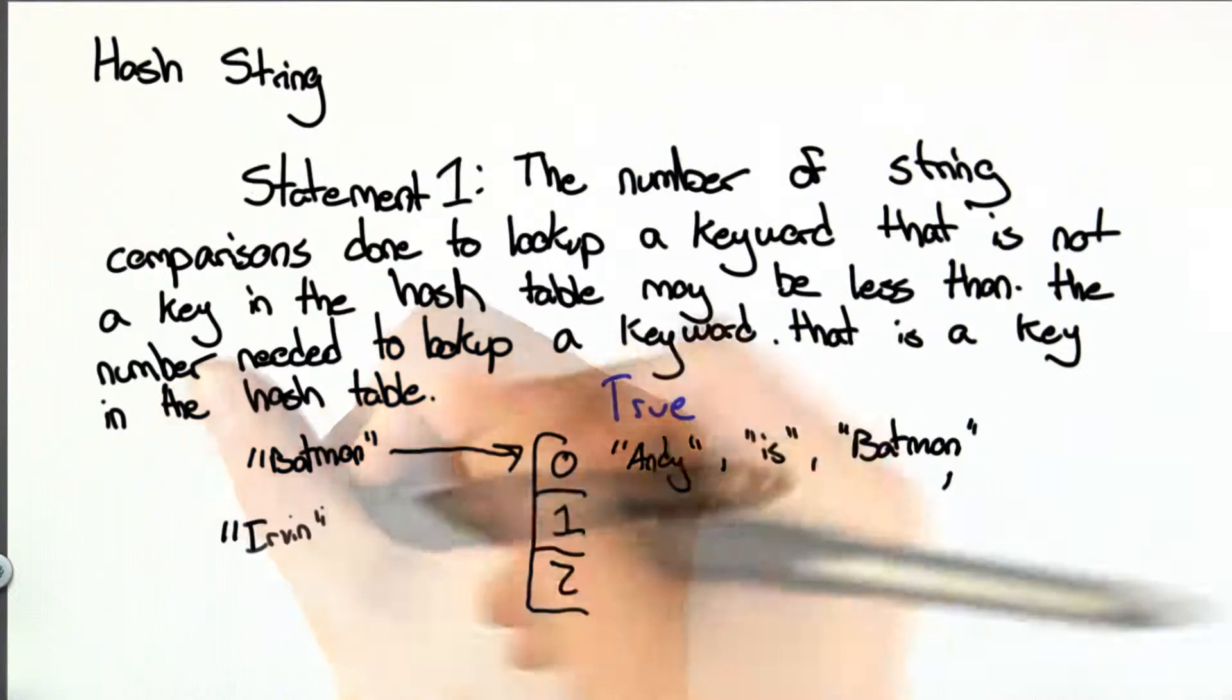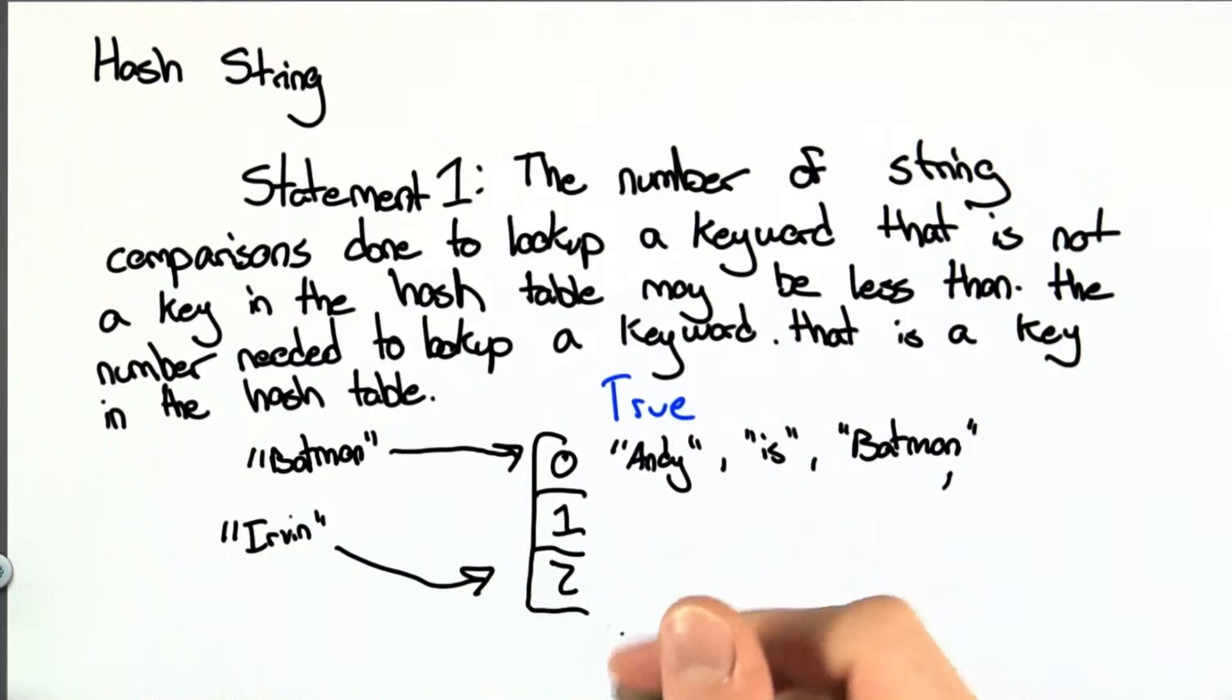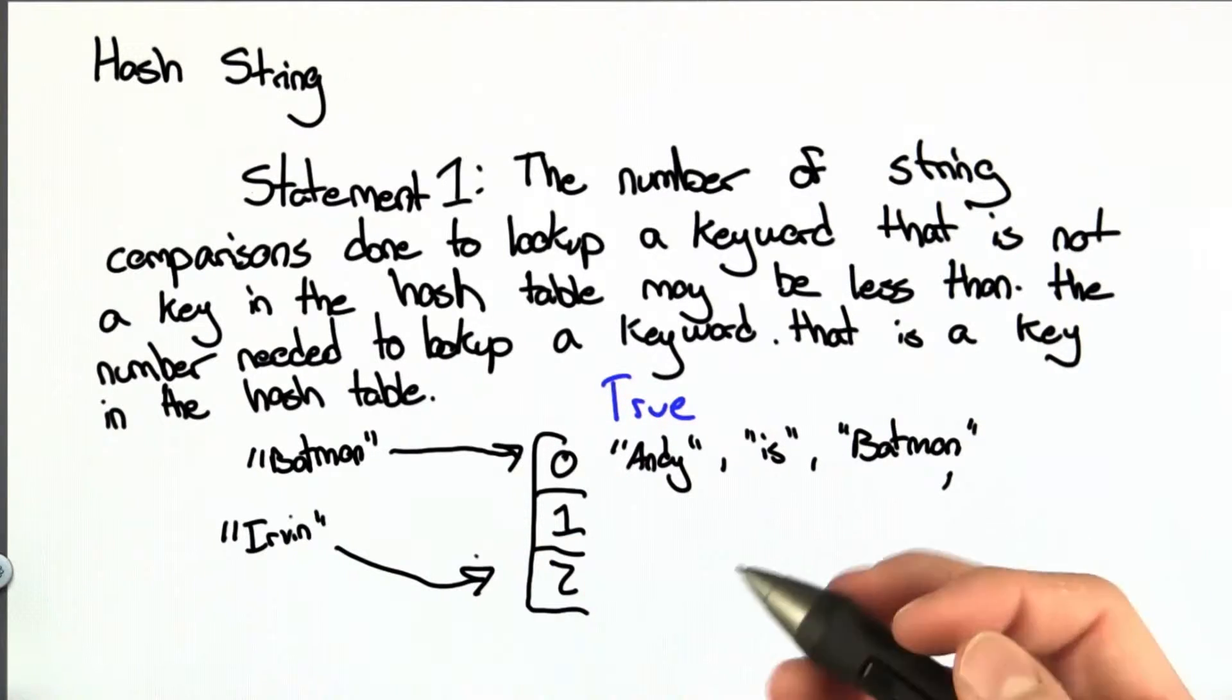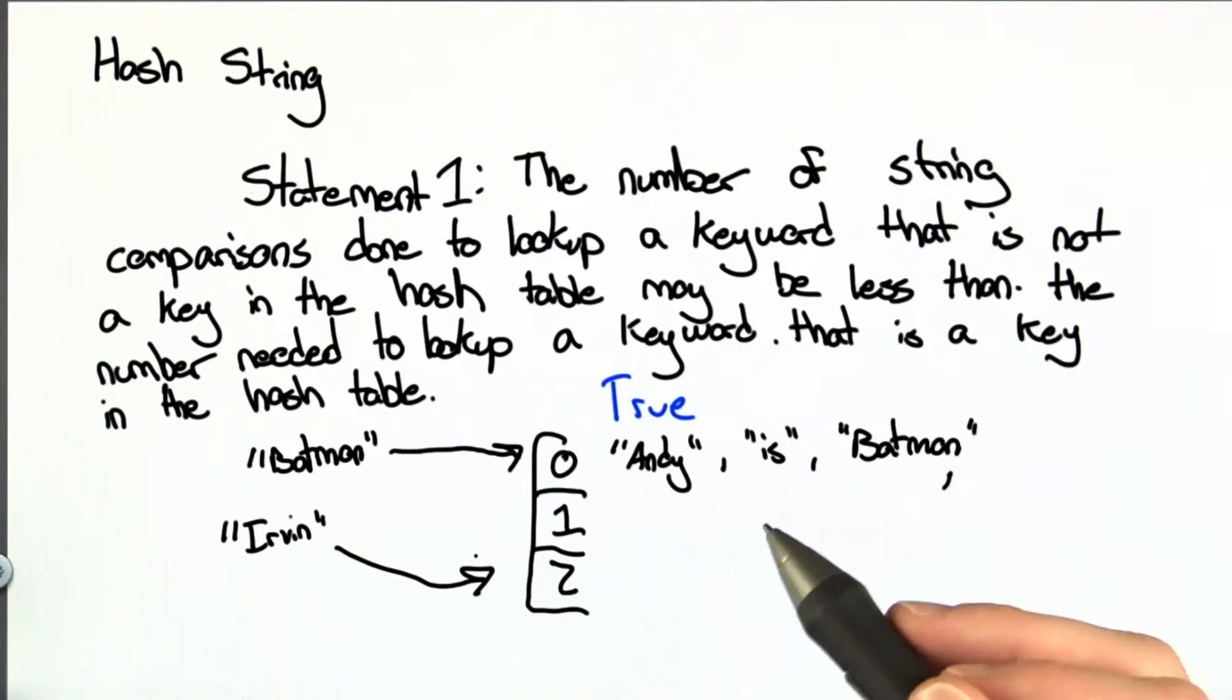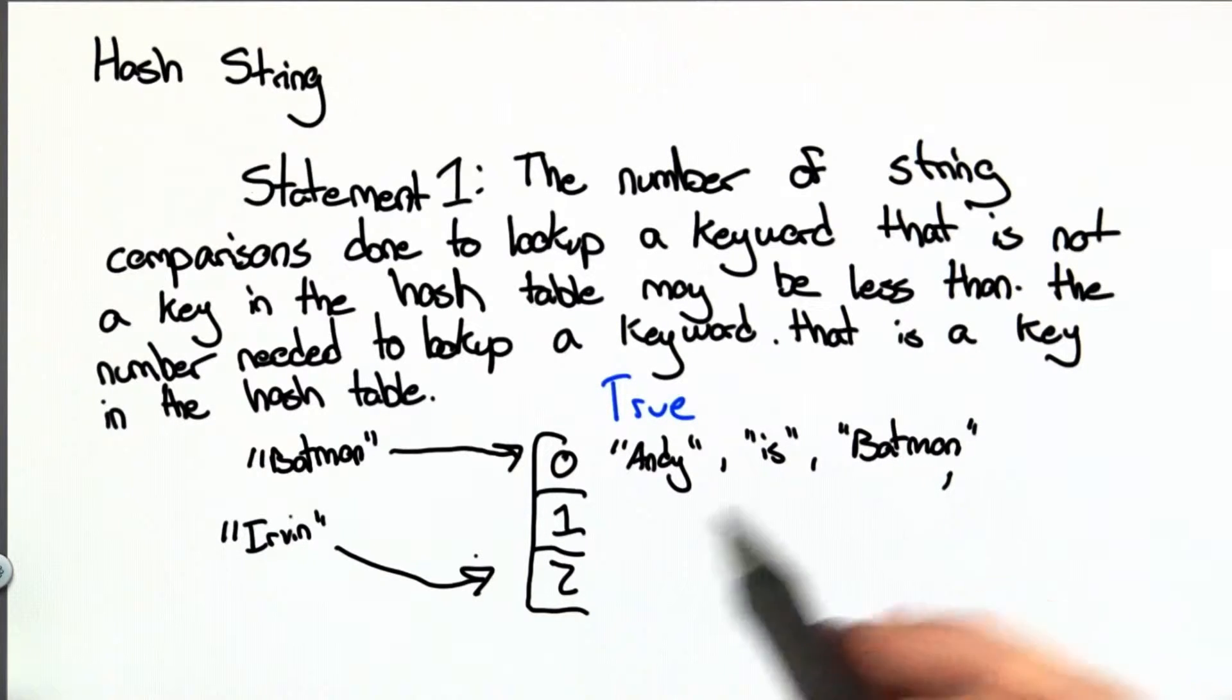Let's say we search for Irvin, and that brings us to bucket 2, and there's nothing in bucket 2, so there's no comparisons being made. This is an example where it actually takes more comparisons to look up something in the hash table than it does to look up something not in the hash table.